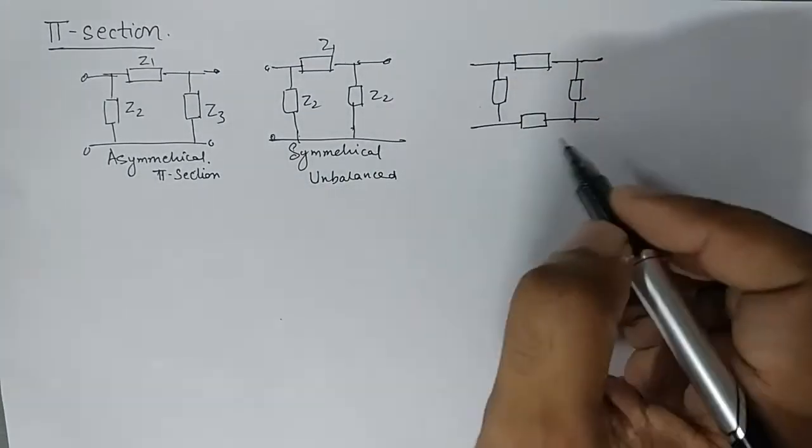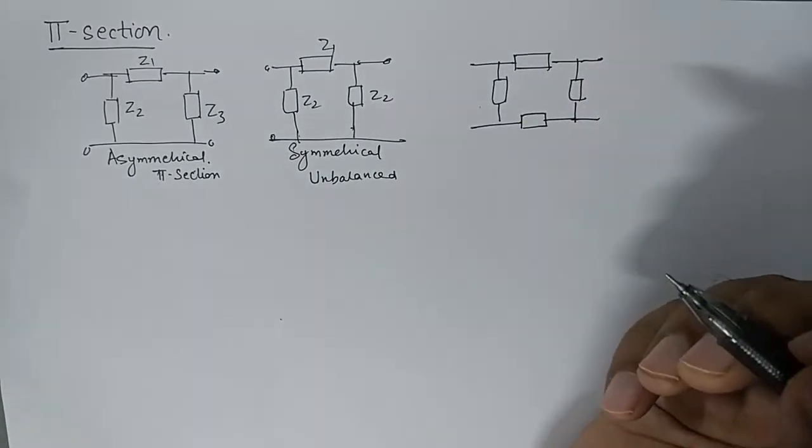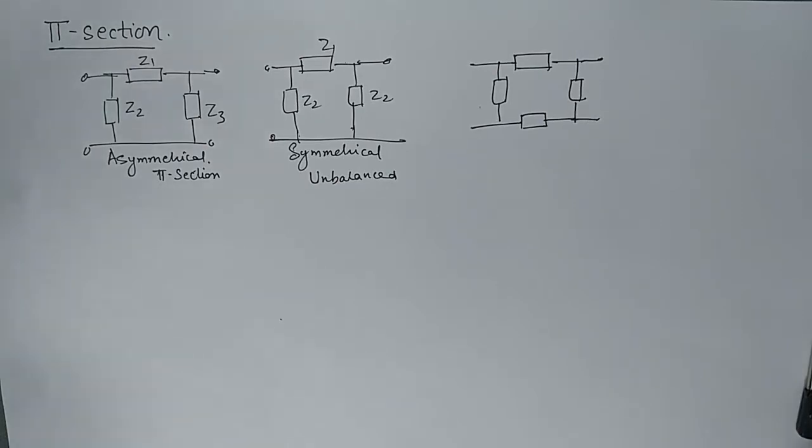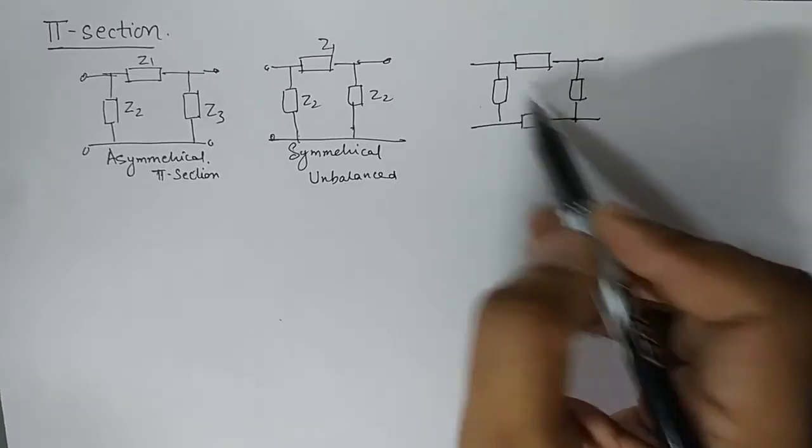Now please understand these kind of two-port networks they can also be thought of as portions of transmission lines. When we wish to balance the transmission lines or when we wish to manipulate the impedance of a transmission line, we add a portion of a transmission line into an existing transmission line and that portion would look something like this.